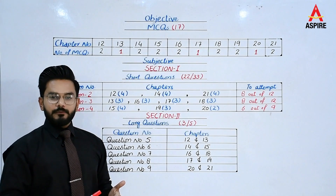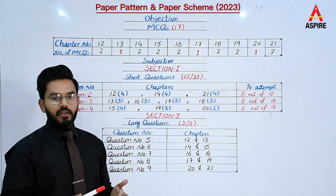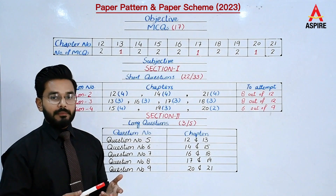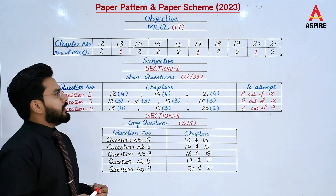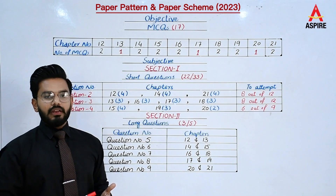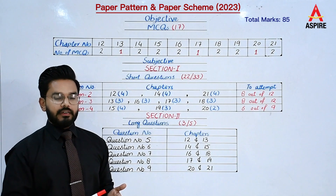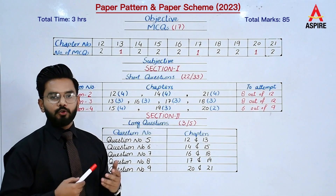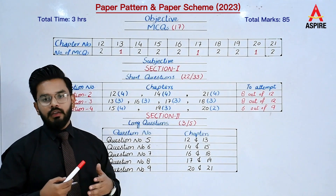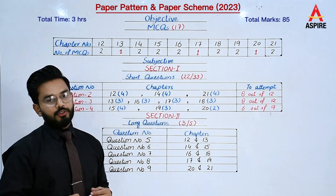First of all, we are going to see the paper pattern and the paper scheme of 2023. Our annual paper is about 85 marks, and the total time and total paper is distributed as follows.